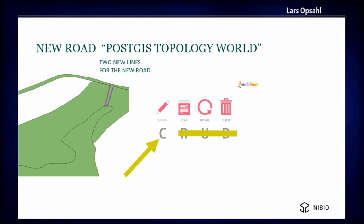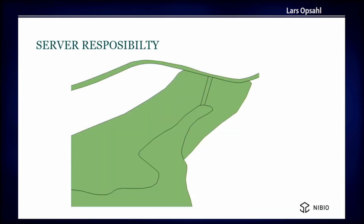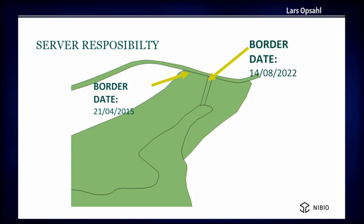The two new lines are sent to the server, and you get this result back. The server's responsibility is to cut out lines that are no longer needed — and as you see, it fits perfectly now. It's also the server's responsibility to keep track of dates. For instance, on the top left there's a date attached to that road edge still from 2015, which is natural. The date on the new road is from this year, and that makes sense.